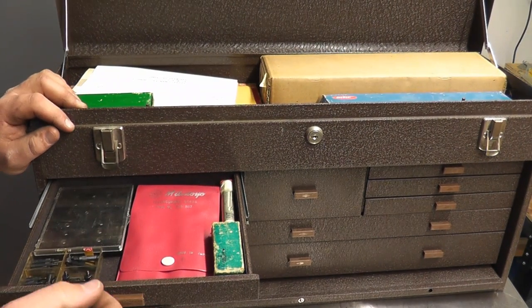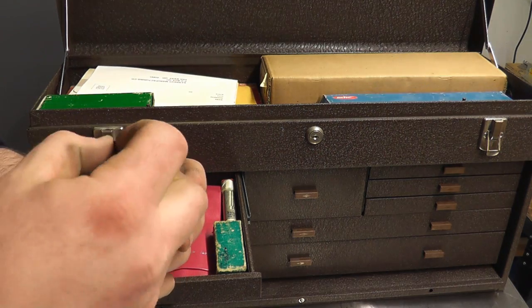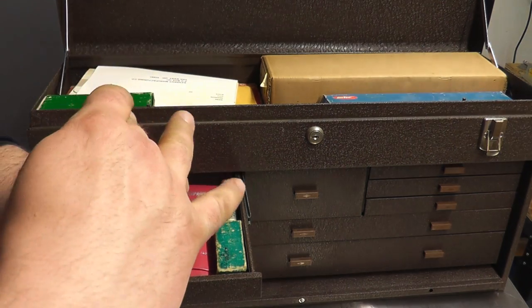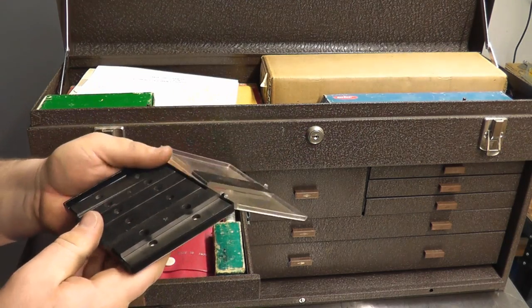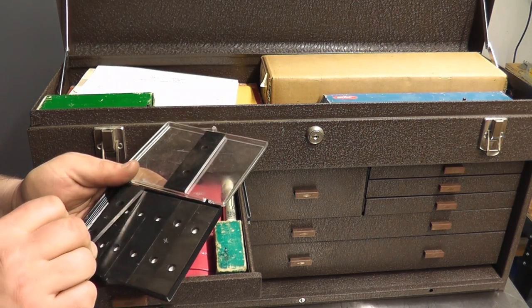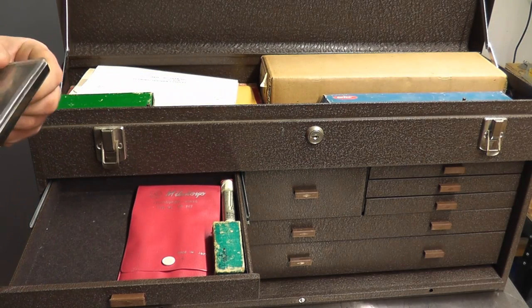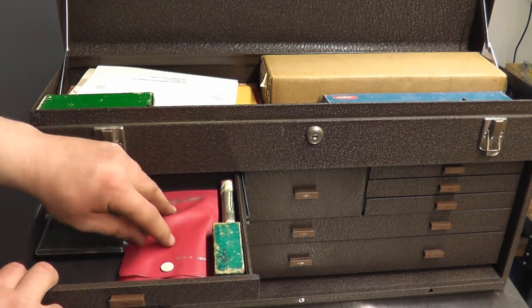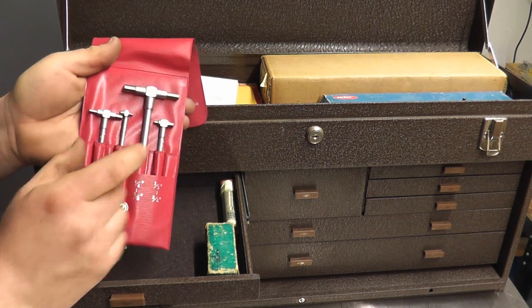Drawer one. We have in here a dial indicator point set to exchange different points for different things. Here's a bent one, there's a pointy one, all different kinds. This looks like small parallels, yep, small set of parallels from half inch to seven eighths. It says made in USA but no brand name on it. This is a set of Mitutoyo telescope gauges, still nice and springy.